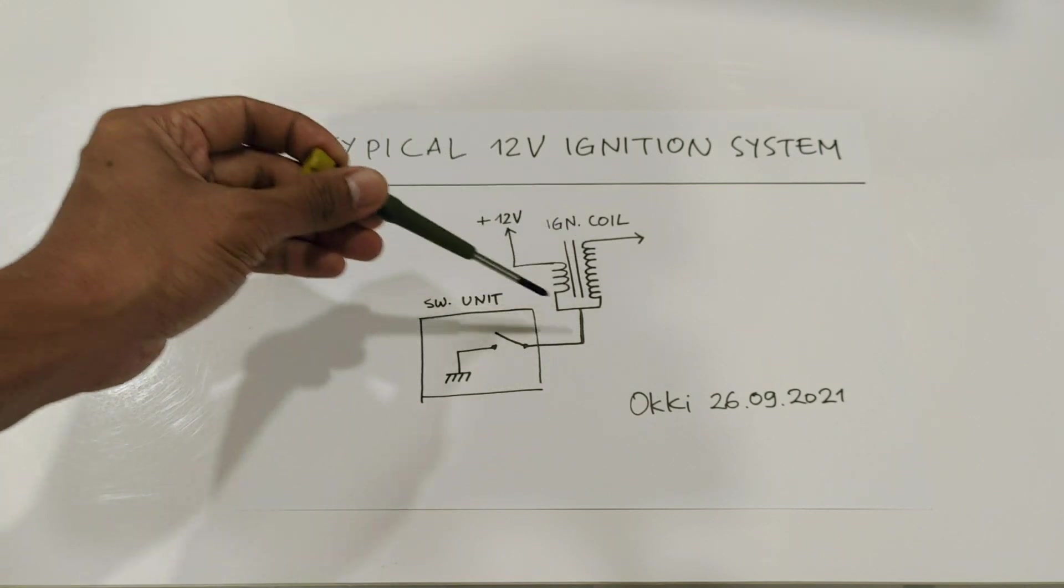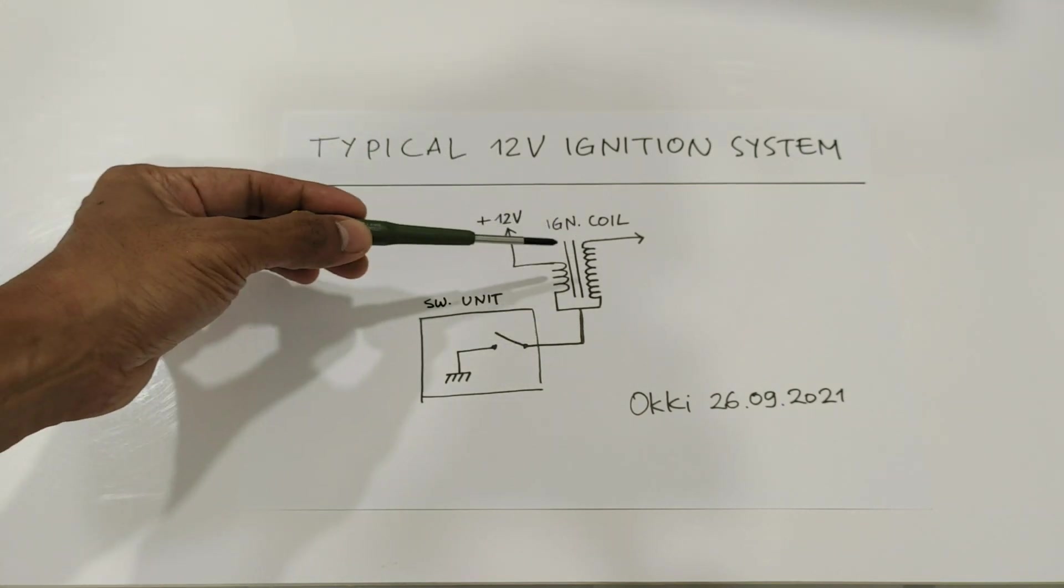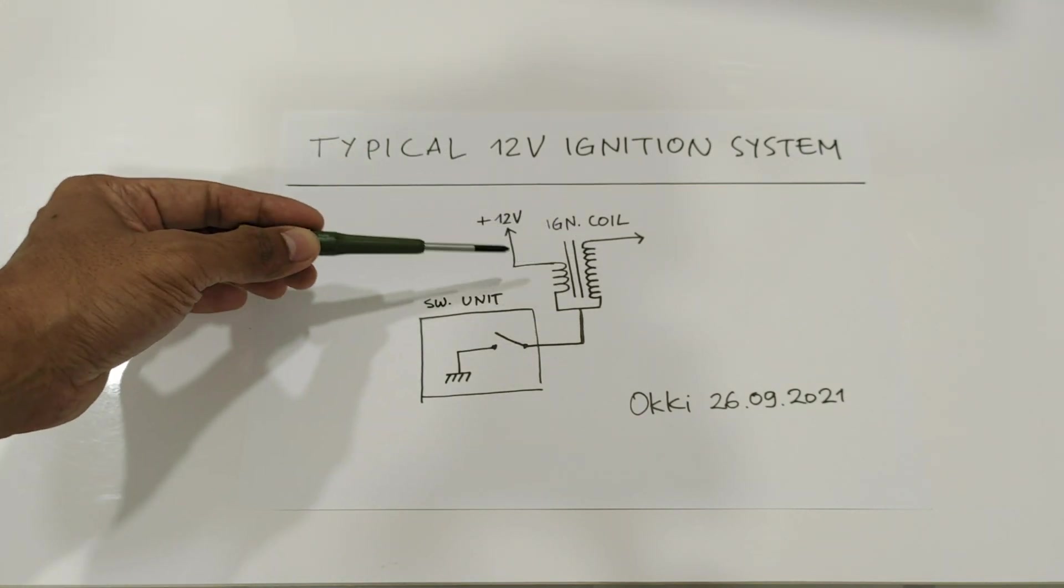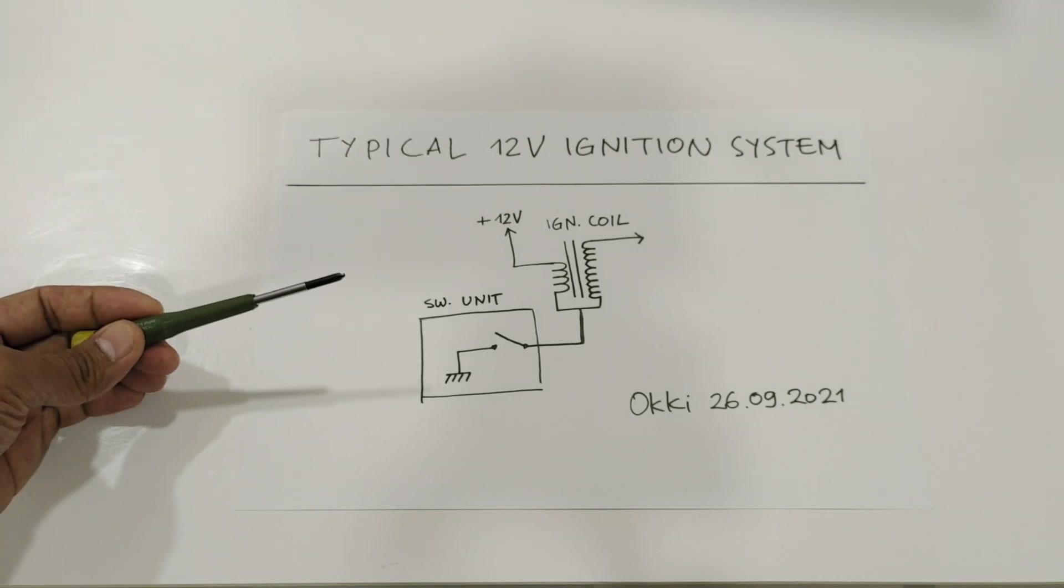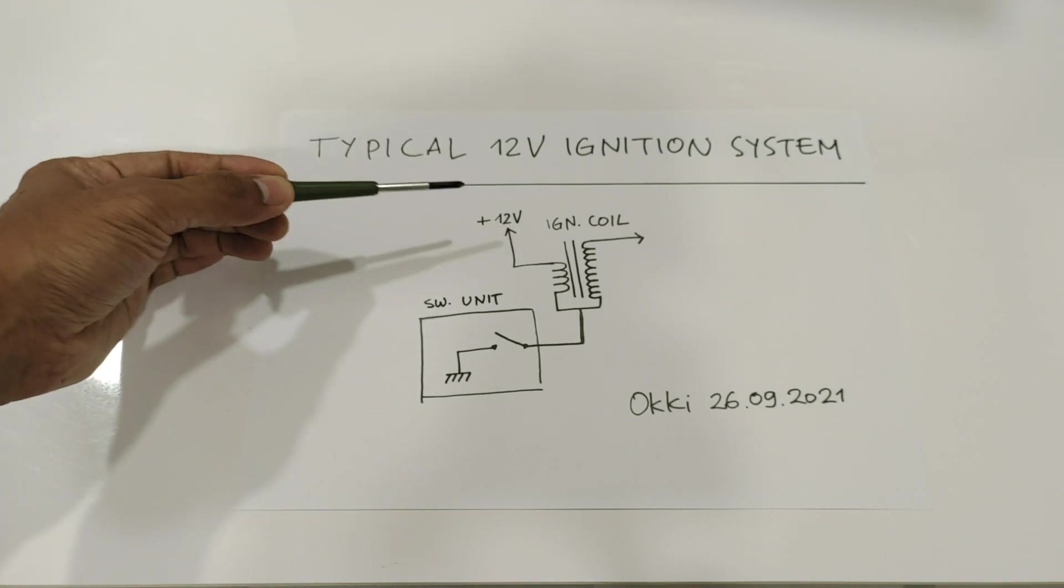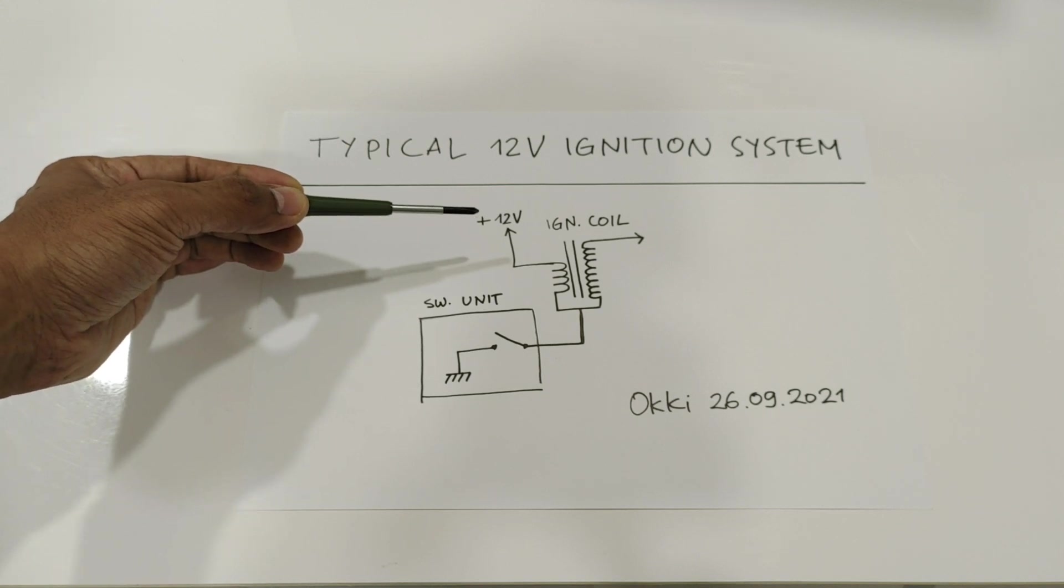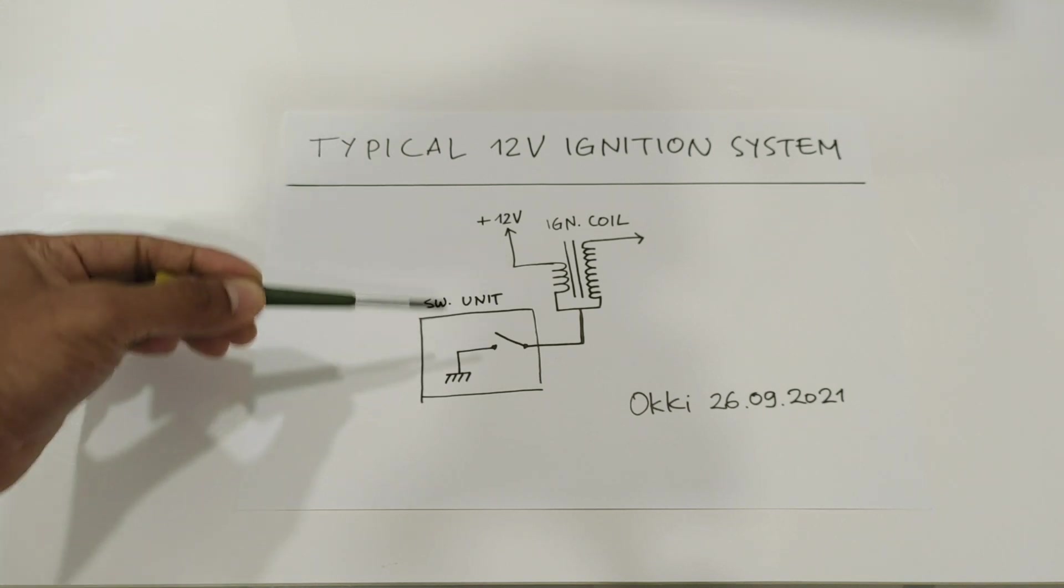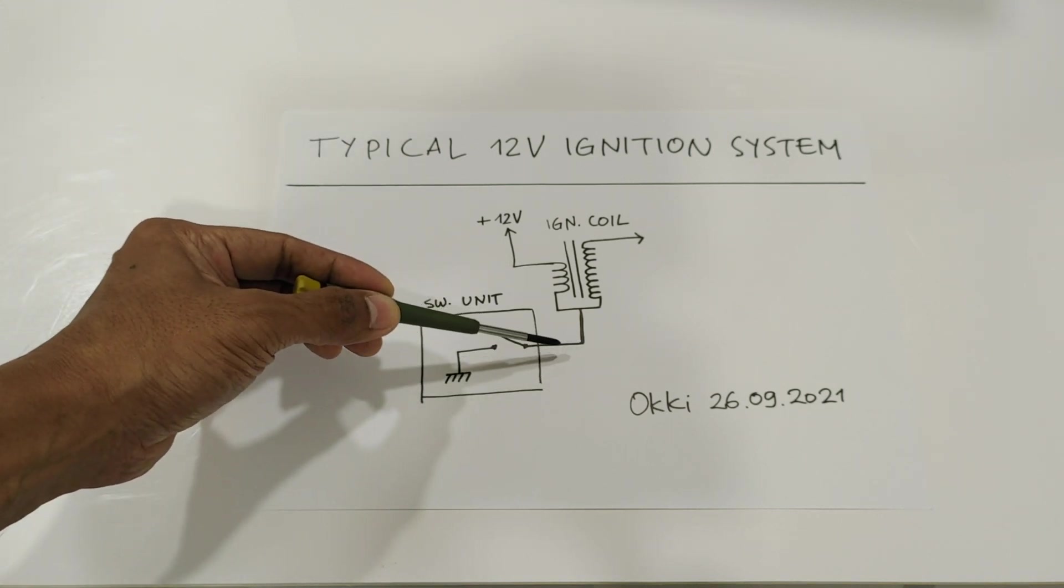Here we have ignition coil. The positive terminal is normally connected to the 12 volt battery or ignition on key, and then the negative terminal of the ignition coil is connected to a switching unit.